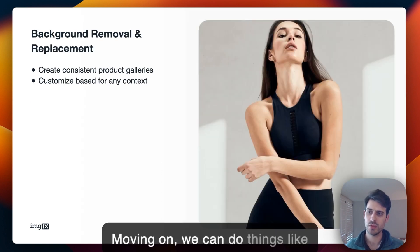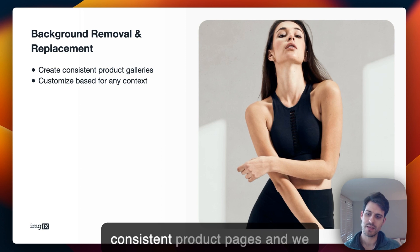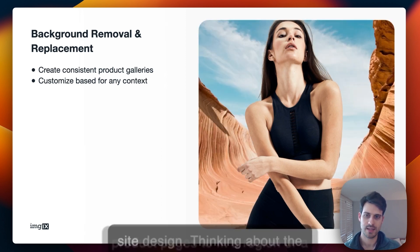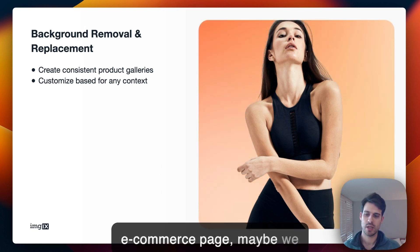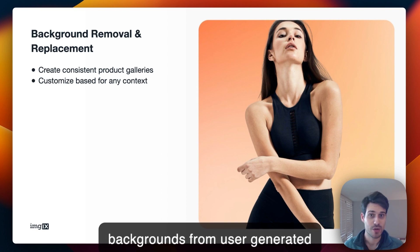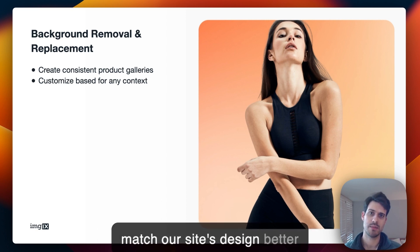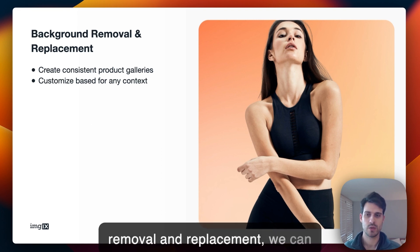Moving on, we can do things like background removal and replacement. We want consistent product pages and the ability to customize them to fit a region or site design. Thinking about that e-commerce page, maybe we want to remove distracting backgrounds from user generated content, or maybe we just want to match our site's design better even if the backgrounds do look good. With automatic background removal and replacement, we can do this.